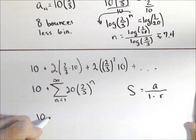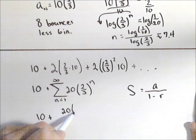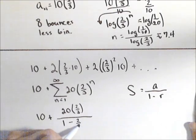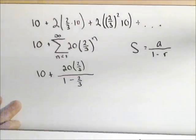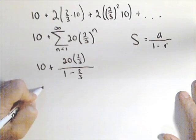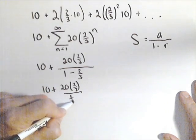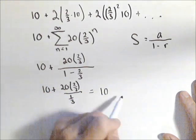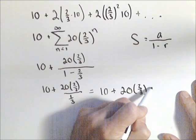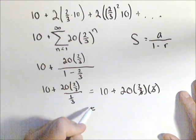So our total distance traveled will be 10 plus the first term, so if I plug in one I get 20 times two-thirds, and this is all over one minus our common ratio of two-thirds. So now we don't really need that one anymore, we know we're doing the total distance traveled. Okay, so we have 10 plus 20 times two-thirds over one-third, which is equal to 10. We're going to flip and multiply, plus 20 times two-thirds times three. This works out pretty nice, these threes cancel. So we have 10 plus 20 times two.